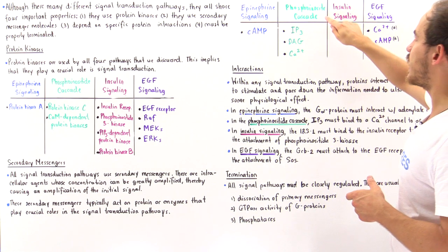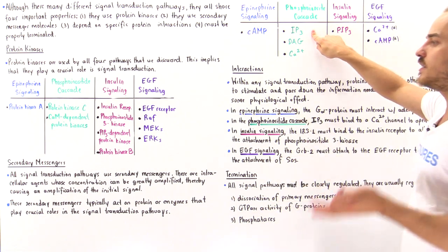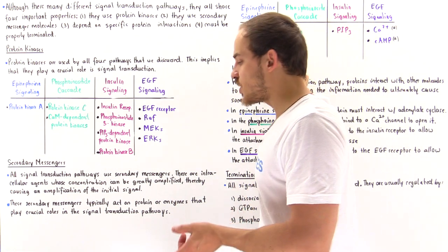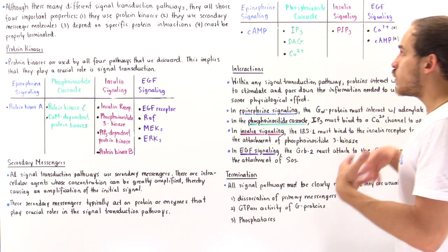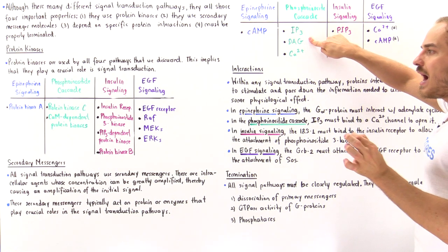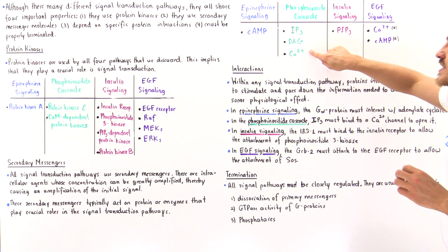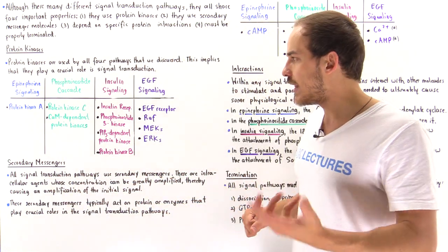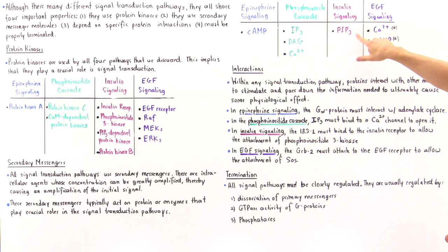In the phosphoinositide cascade, we discussed three different types of secondary messenger molecules: IP3, DAG, and calcium. IP3 binds onto a calcium channel in the ER membrane to allow calcium to move into the cytoplasm. Then calcium, with the help of DAG, binds onto protein kinase C and activates it. On top of that, calcium also binds to calmodulin to form the calcium-calmodulin complex, which then activates those calmodulin-dependent protein kinases.